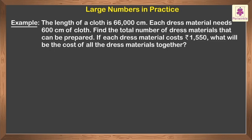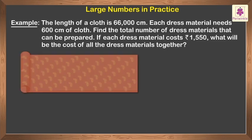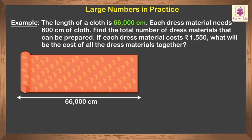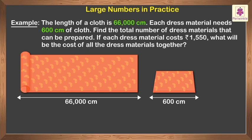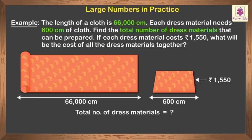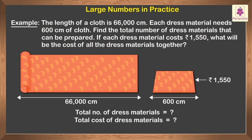Let us look at another word problem. The length of a cloth is sixty-six thousand centimeters. Each dress material needs six hundred centimeters of cloth. Find the total number of dress materials that can be prepared. If each dress material costs rupees one thousand five hundred fifty, what will be the cost of all the dress materials together?